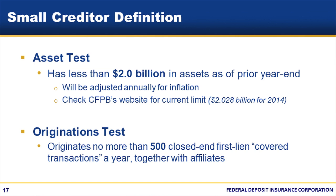The asset test threshold will be adjusted each year, so be sure to check the CFPB's website for the applicable asset threshold. For 2014, the threshold was $2.028 billion in assets as of December 31, 2013. Only your assets count, not those of any affiliates. The asset test is determined as of the last day of the preceding calendar year. To meet the originations test, you must have originated 500 or fewer first lien covered loans in the preceding year. Loans made by bank affiliates do count toward that 500 threshold.